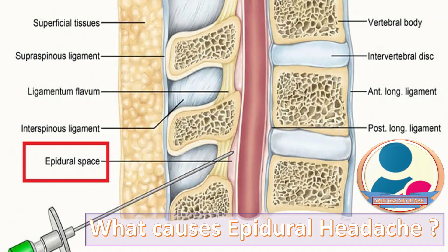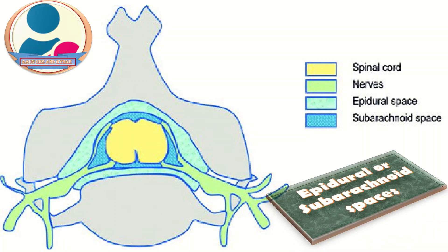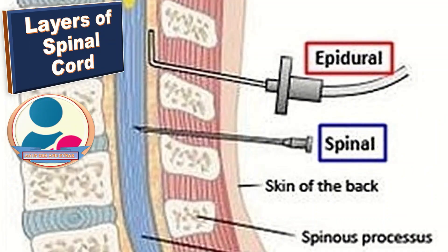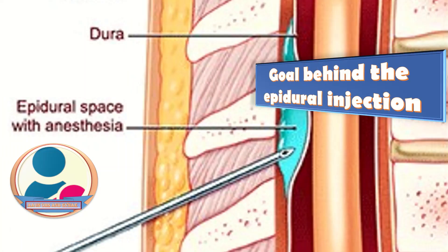What causes epidural headache? The spinal column is a massive network of veins, nerves, and arteries along with fats, all protected by the spinal bones. Because of this, healthcare professionals can only inject in either the epidural or subarachnoid spaces. A needle must pass through several layers of skin and muscle, with the epidural space containing mostly air while the subarachnoid space holds cerebrospinal fluid.